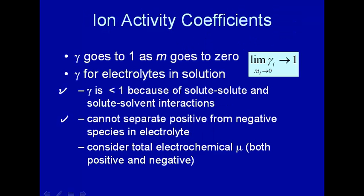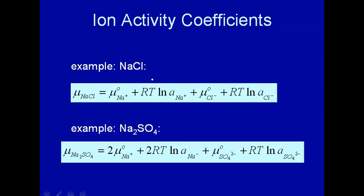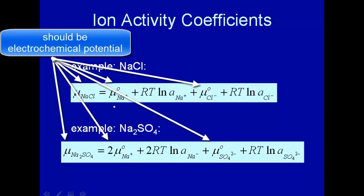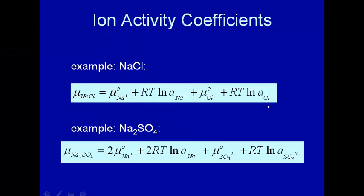As mentioned, we cannot separate positive from negative species in electrolytes, so we have to consider the total electrochemical potential — both the positive and the negative. For sodium chloride, the total chemical potential is the sodium standard state plus RT times the activity of sodium, plus the chloride standard state plus RT log of the chloride activity. For sodium sulfate, the sodium term is multiplied by 2 because dissolving it gives 2 sodium ions, plus the sulfate term.